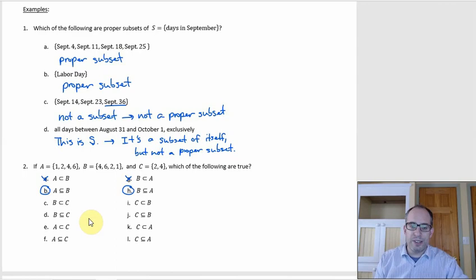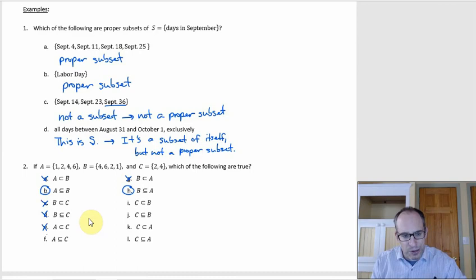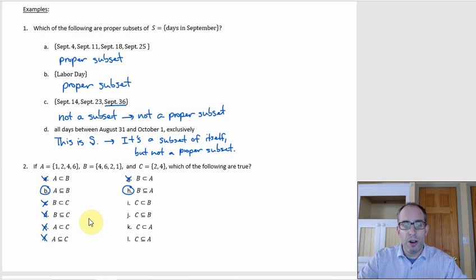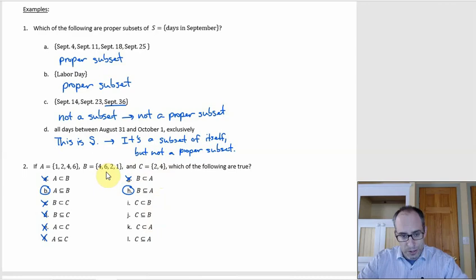Looking at C, it's just {2, 4} — smaller than A and B. There's no way A or B could fit inside C when C is smaller. For example, A has a 1 in it and C doesn't, so there's no way A could be a subset of C, let alone a proper subset. The same argument applies to B. However, C being a subset of B works because 2 and 4 are both in B. And since there's stuff in B not in C — like 1 and 6 — C is also a proper subset of B. Since A and B are the same set, C is a proper subset of A as well.